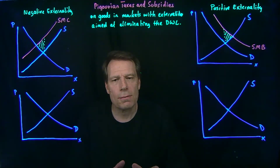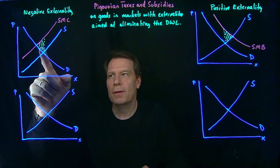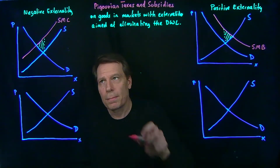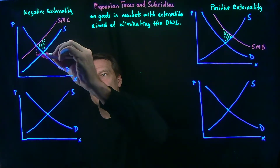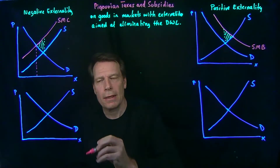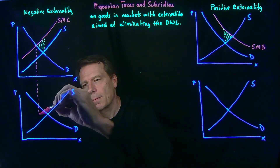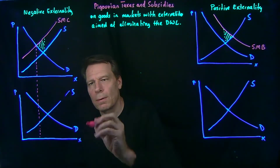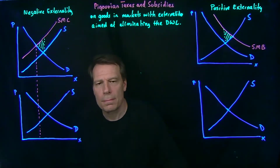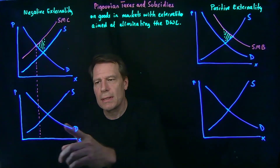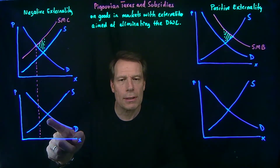So we can see the intuition of that in our graphs. We see in this graph that the socially optimal quantity is the quantity where social marginal cost intersects demand. If we bring that down to this picture where we just have our demand and supply curves, we see that that's below the quantity that the market would produce in equilibrium.